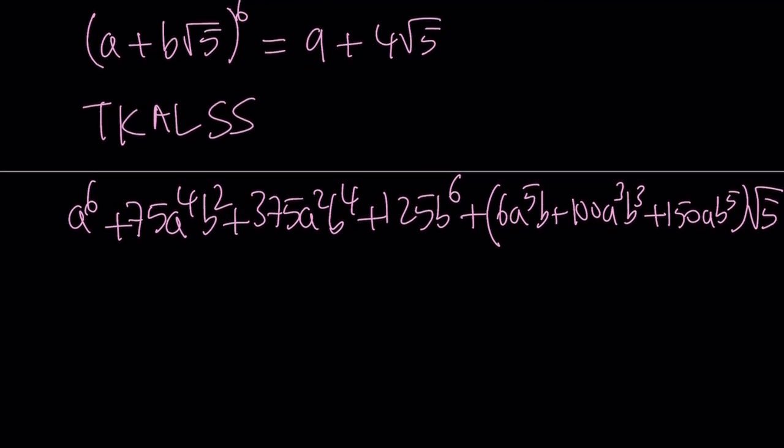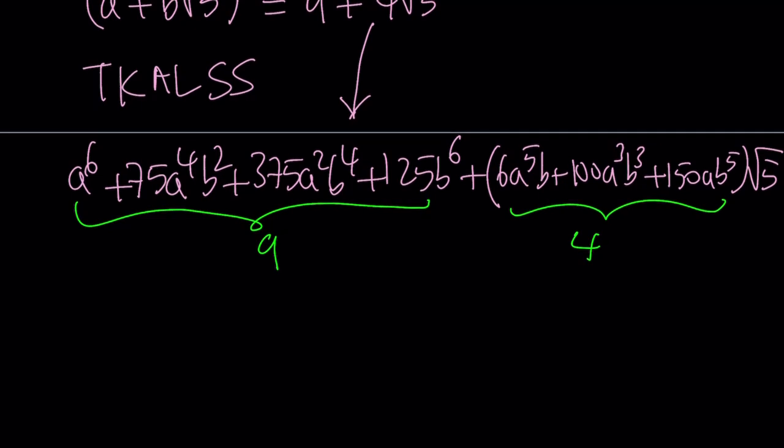Now by comparing this to 9 plus 4 root 5, we notice that the coefficient of root 5 needs to be 4 and the other term here must be equal to 9. We're going to solve this as a system and find the a and b values. Since this is a homogeneous system, a equals kb will do the trick.